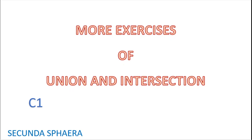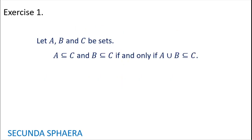Welcome back to the channel. This video is going to present more exercises on union and intersection of sets. The first exercise says: let A, B, and C be sets. A is contained in C and B is contained in C if and only if A union B is contained in C.